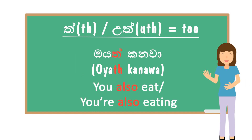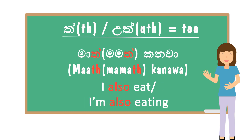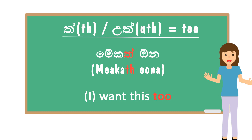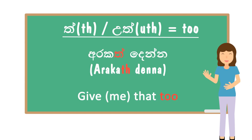Examples: 'OYA TH KHANNAVA' means 'you also eat' or 'you are also eating.' 'MATH KHANNAVA' means 'I also eat' or 'I'm also eating.' 'MATH KHANNA' means 'I want this too.' In Sinhala sentences, you don't have to add a subject to make a complete sentence — if the listener knows what the subject is, you can omit it. Another example: 'ARAKAT THENNA' means 'give me that too.' We add the UTH sound because those words end with a vowel.